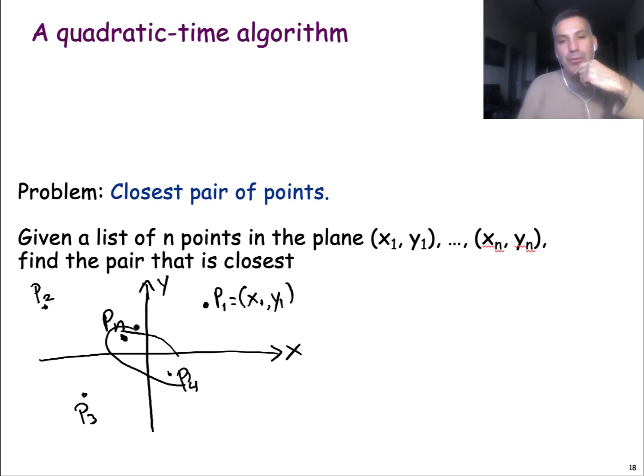A brute force way is to consider every pair of points. If we have n points it means that we have n choose 2, which is n times n minus 1 divided by 2 pairs of points. And so we can consider every such pair of points, compute the distance between them, and see which distance is the smallest.